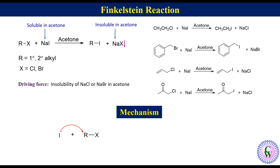At the same time, the halogen departs, leading to the formation of a transition state, which then collapses to give alkyl iodide and halide.